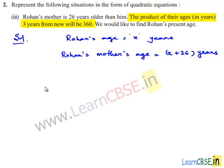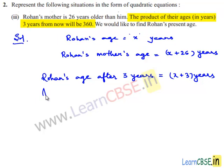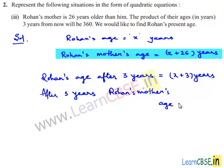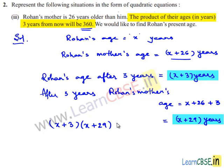After 3 years, Rohan's age will be x plus 3 years. And after 3 years, Rohan's mother's age is x plus 26 plus 3 years, which equals x plus 29 years. According to the given problem, the product of their ages after 3 years will be 360. We can write: (x plus 3) multiplied by (x plus 29) is equal to 360.